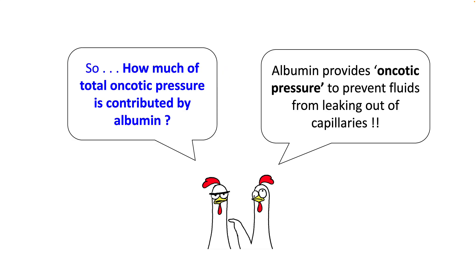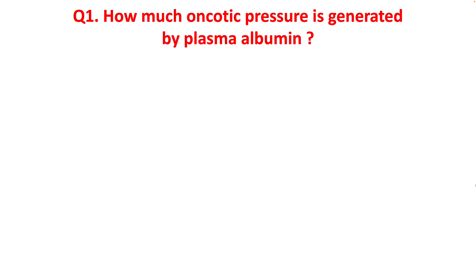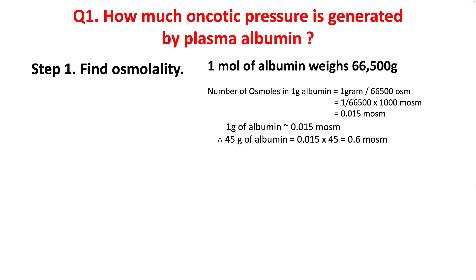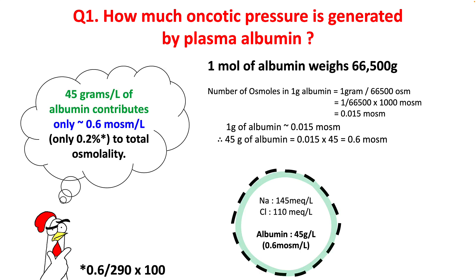The most commonly taught concept is that albumin provides oncotic pressure to prevent fluid from leaking out of capillaries, and that its absence results in edema formation. Let's look at how much of the total oncotic pressure is really contributed by albumin. All you have to do is figure out the molecular weight of albumin and calculate how many osmoles are present in one gram. So, 45 grams of albumin has 0.6 milliosmoles; at a normal serum concentration of 4.5 g/dL, the total contribution is around 0.6 milliosmol per liter.